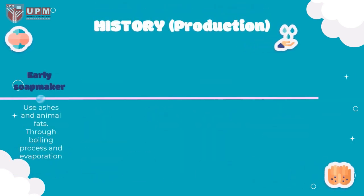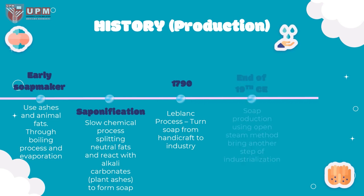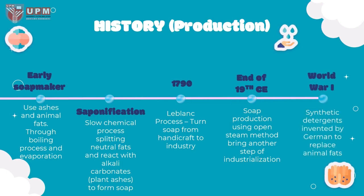Early soap makers used ashes and animal fats to make soap through boiling, evaporation, and cooling processes. Saponification is a process where slow chemical splitting of neutral fats reacts with alkali carbonate from ashes to form soap. In 1790, the introduction of the LeBlanc process turned soap from handicrafts to industry. At the end of the 19th century, soap production using the open steam method brought another step to industrialization. Synthetic detergent was invented by Germans during World War I to replace fats, so that it could be used for other purposes.